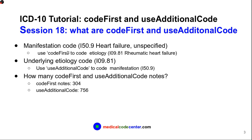In general, the manifestation code and the underlying etiology code refer to each other. In the 2019 version of ICD-10-CM, there are a total of 304 Code First notes and 756 Use Additional Code notes.